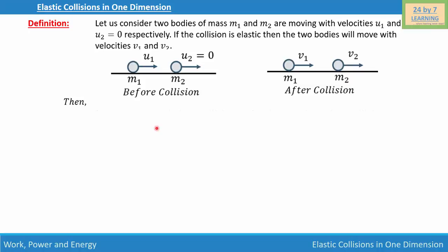The total momentum before collision is equal to the total momentum after collision. Substituting the values, we write m1·u1 = m1·v1 + m2·v2, and let this be our first equation.